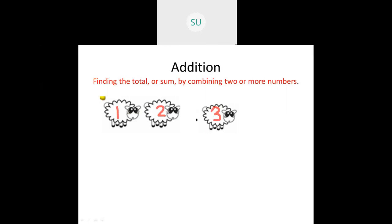We have a total of 3 sheep now in the farm. So 2 and 1 makes 3 - when you combine 2 and 1 together it makes 3. The word 'and' here means that you have to add. So when I add 2 and 1 I get 3.